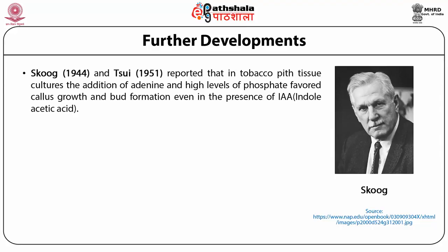Skoog and Tsui reported that in tobacco pith tissue culture, addition of adenine and high levels of phosphate favored callus growth and bud formation even in the presence of IAA. Now indole acetic acid is an auxin known to inhibit shoot formation. So the importance of this discovery was that if you manipulate adenine level, phosphate level and so on, then even in the presence of IAA you can get bud formation. This is talking about the interplay of other growth substances that you are putting in the media.